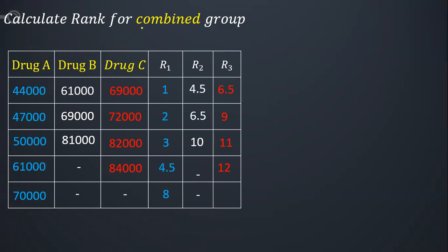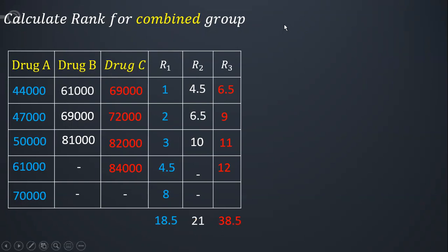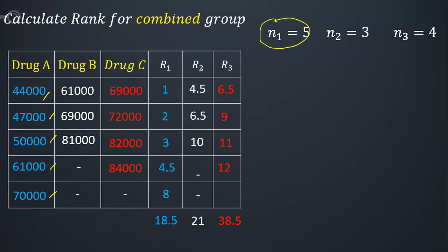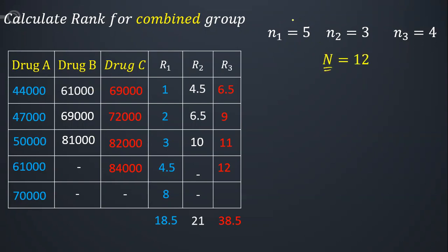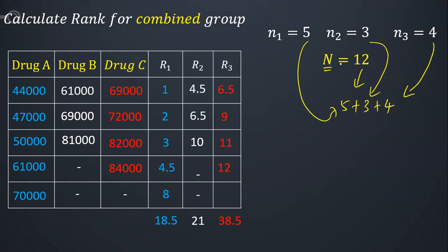Once all ranking is done, I sum the ranks: sigma R1, sigma R2, and sigma R3 for each group. N1 is 5 (five elements in group one), N2 is 3 (three elements in group two), N3 is 4 (four elements in group three). Capital N equals N1 + N2 + N3 = 5 + 3 + 4 = 12. Sigma R1 squared equals 18.5 squared divided by 5, sigma R2 uses 21 squared divided by 3, and sigma R3 uses 38.5 squared divided by 4.